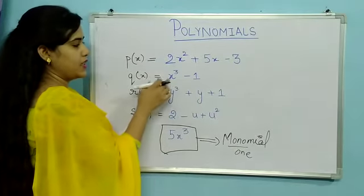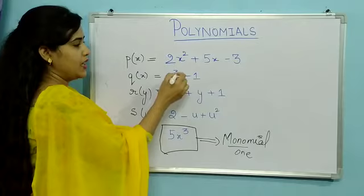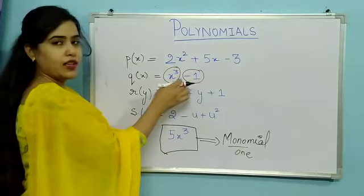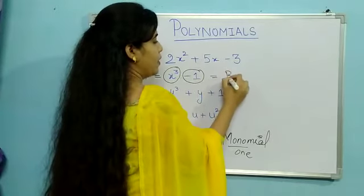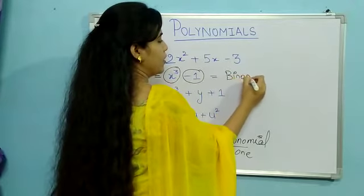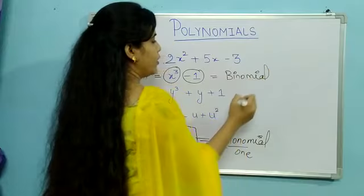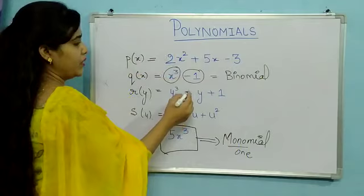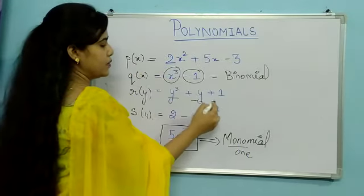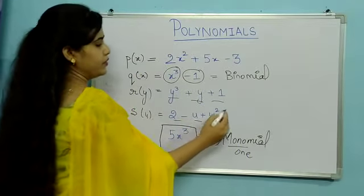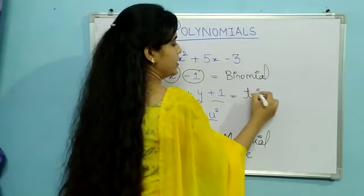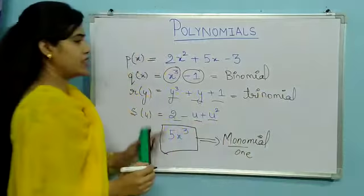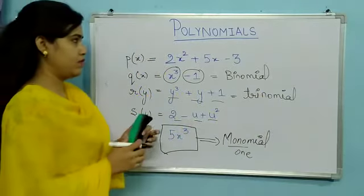Here we have two terms. We call it a trinomial. These are the naming conventions of polynomials.